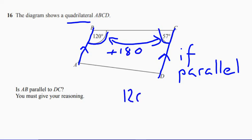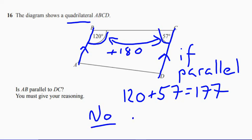So 120 plus 57 is equal to 177. So no. So they're not parallel.